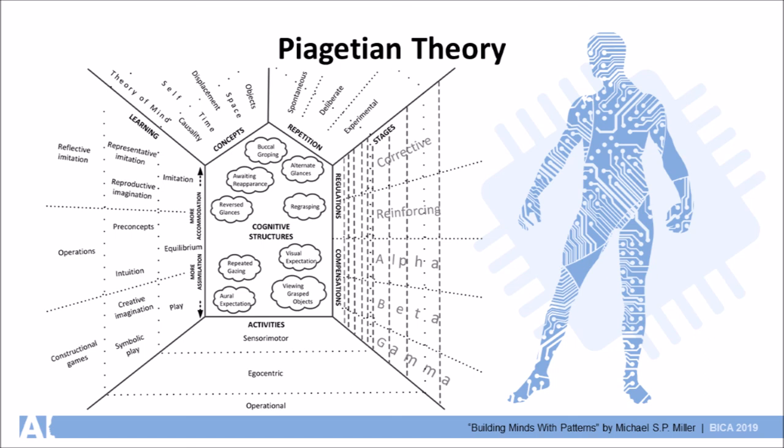The imitation and play of the individual becomes increasingly complex as the individual progresses through sensory motor, egocentric, and operational phases of life.